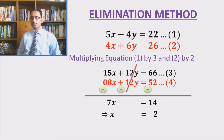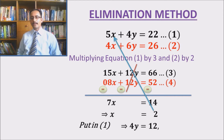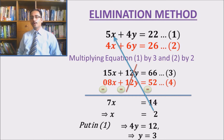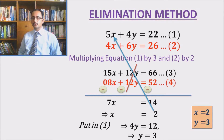So x equals to 2. In order to find the value of y, I will put this value of x in equation number 1 and I will get 4y equals to 12. If 4y equals to 12, dividing both sides by 4, we get y equals to 3. So our solution of this pair of linear equations is (2, 3), meaning x equals to 2 and y equals to 3.